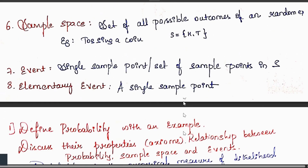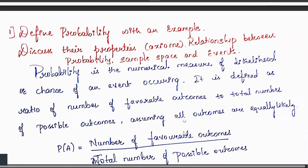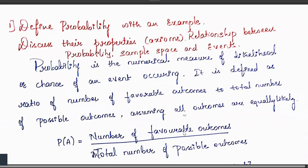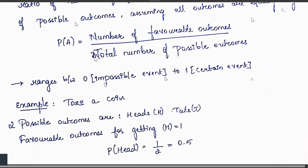Next topic is probability. The question is asked as: define probability with an example and discuss its properties (axioms) and the relationship between probability, sample space, and events. Probability is a numerical measure of the likelihood or chance of an event occurring. It is defined as the ratio of the number of favorable outcomes to the total number of outcomes — where all outcomes should be equally likely. Probability always ranges between 0 and 1; 0 means an impossible event and 1 means a certain event.